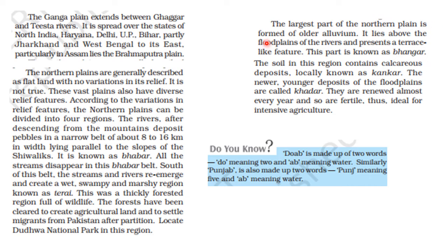The large part of the northern plain is formed of older alluvium. It lies above the flood plains of the rivers and presents a terrace-like feature; this part is known as Bhangar. The soil in this region contains calcareous deposits locally known as Kankar, meaning the particles are coarse-grained. The newer, younger deposits of flood plains are called Khadar. Every year during floods these soils get renewed, consisting of fine particles, making them very fertile and ideal for cultivation of a variety of crops.